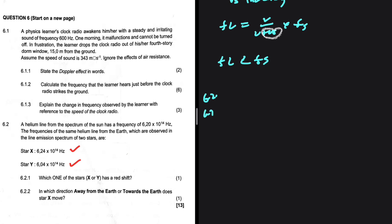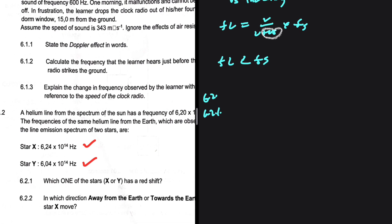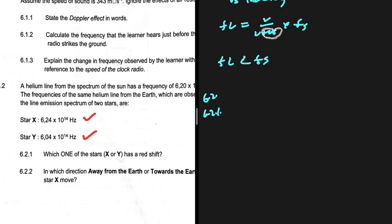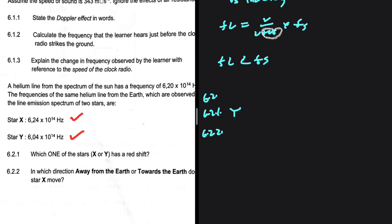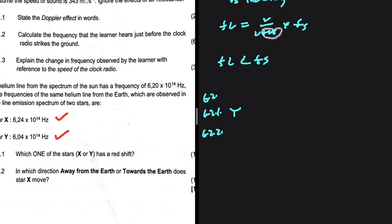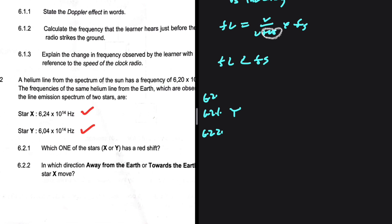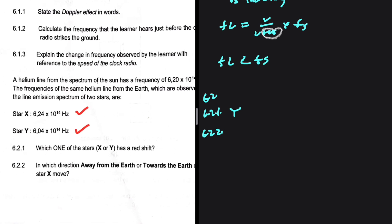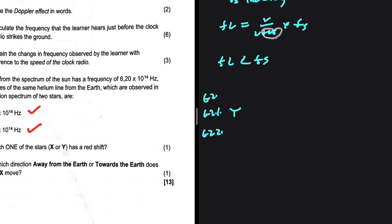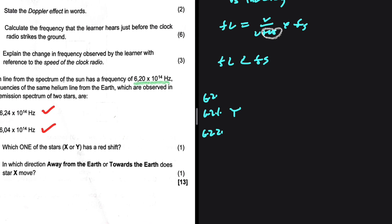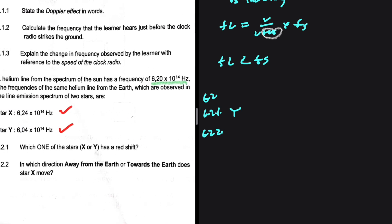6.2.1: Which one of the stars, X or Y, has a redshift? The one with a smaller frequency has a redshift because it has a higher wavelength. So that is star Y. And 6.2.2: In which direction, away from the earth or towards the earth, does star X move? Star X has a higher frequency than our reference point, 6.2 × 10¹⁴ Hz, so it should be moving towards the earth.